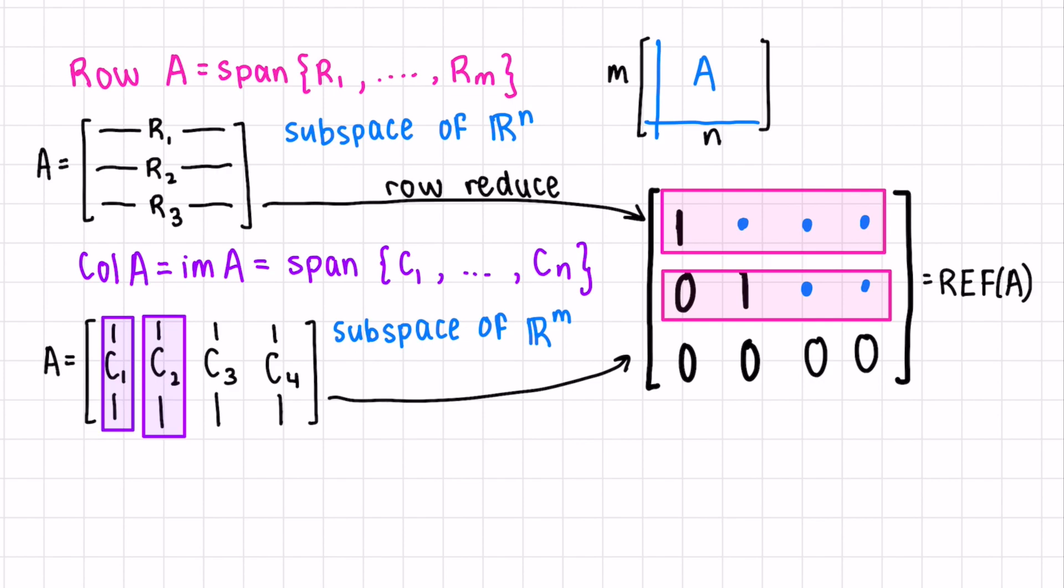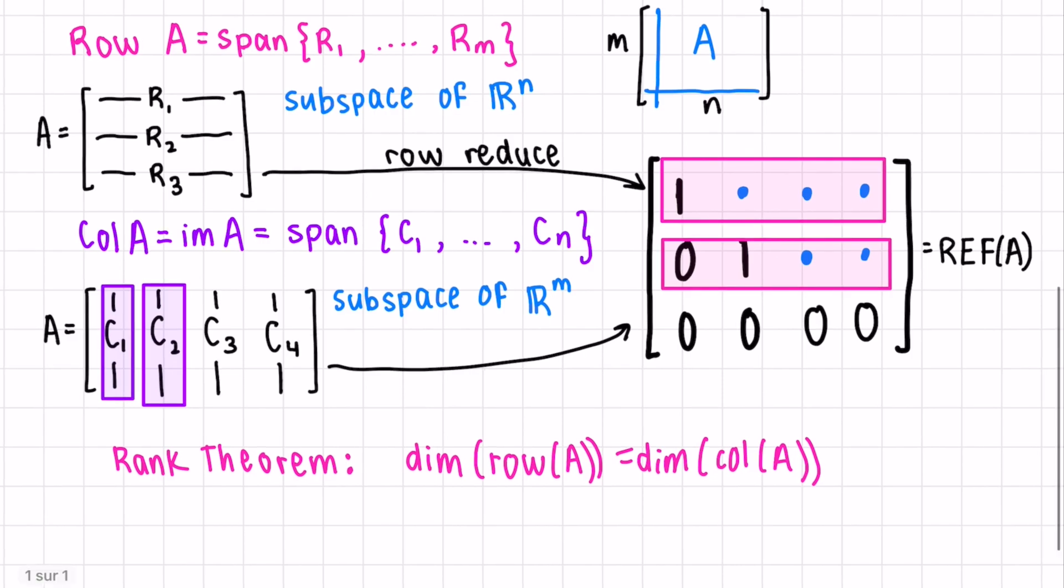One last thing to mention is the rank theorem. Firstly, since both the column space and the row space are dependent on the number of leading ones in our row echelon form of our matrix, we can say that their dimensions are equal. Remember that dimension is the number of elements in every single basis of that space. And what does this equal? This equals the rank of A.